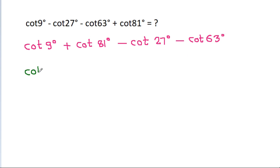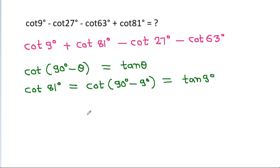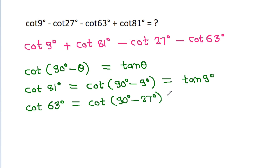And cot(90° - θ) is equal to tan θ. So, cot 81° will be equal to cot(90° - 9°), which equals tan 9°. And cot 63° will be equal to cot(90° - 27°), which equals tan 27°.